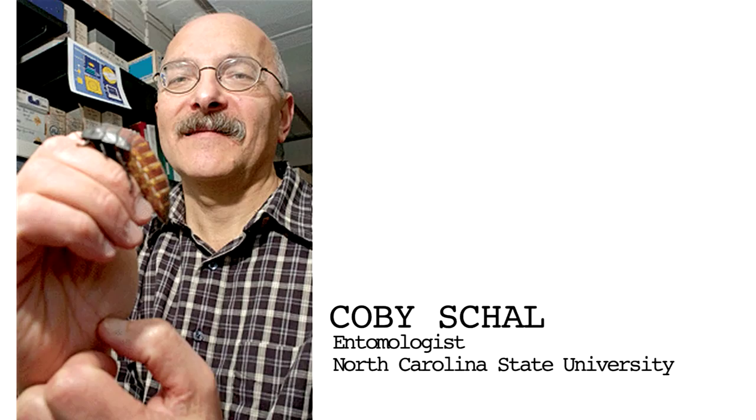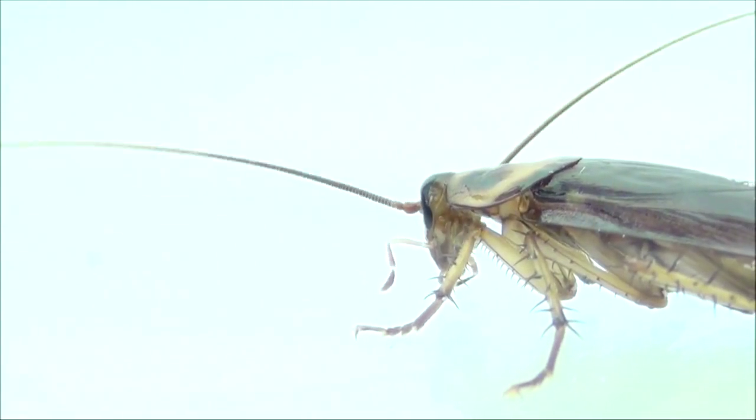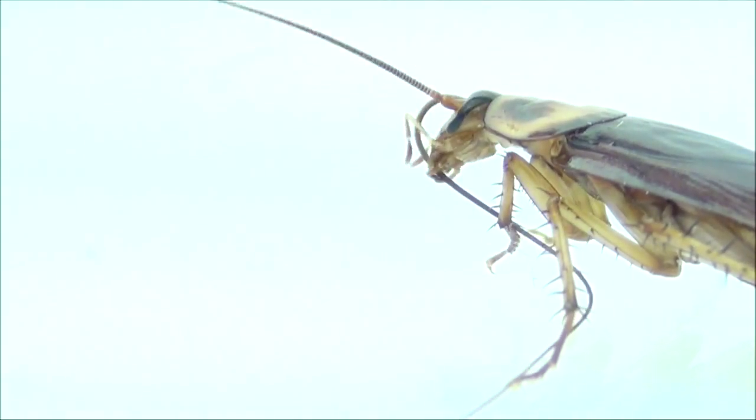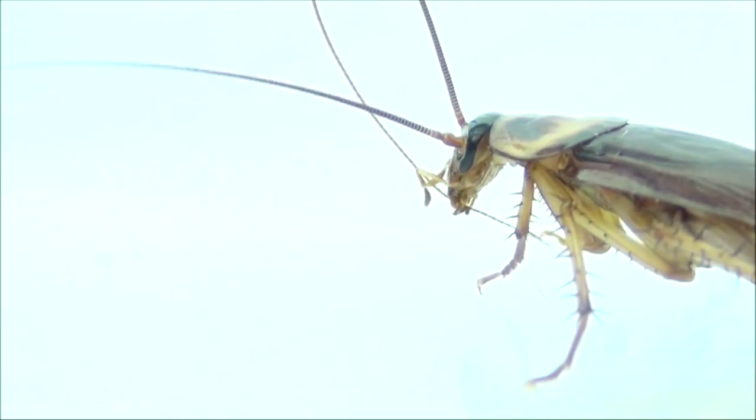Cockroaches constantly groom themselves, so a cockroach will sit there and maybe start with the antennae by bringing the antennae down to its mouth and then running the antennae through its mouth parts from the base of the antennae to the tip of the antennae.